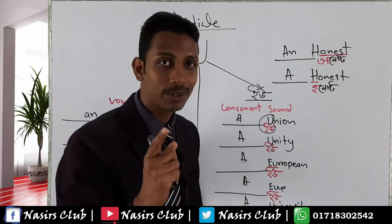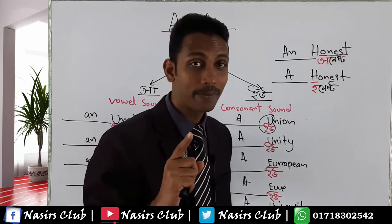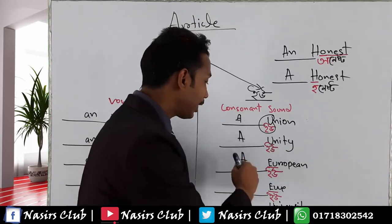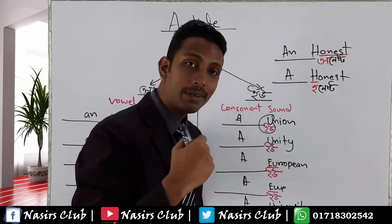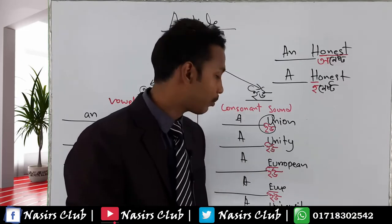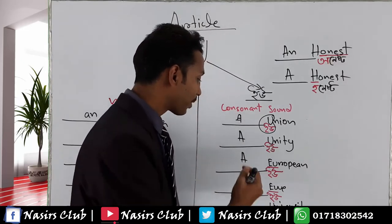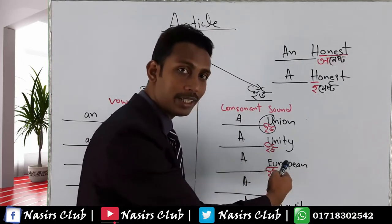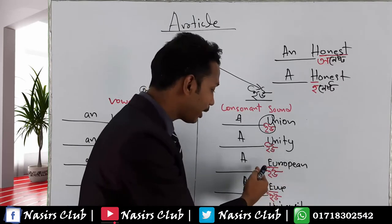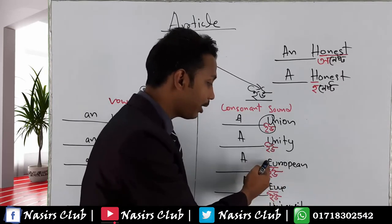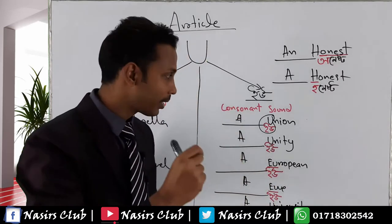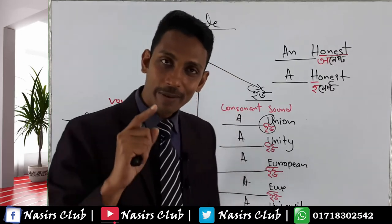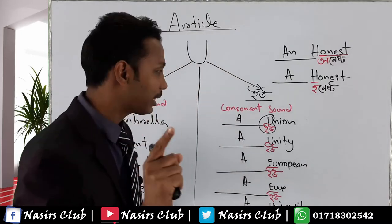So we say 'a European', not 'an European'. That is 'an U' would be wrong here. But if you go by grammar, the term is a function — it is a matter of sound, not spelling. Why? Because the sound is a consonant sound 'yu', so we use 'a'.